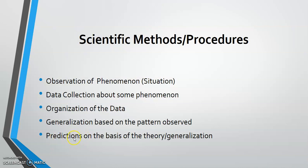The final scientific method is predictions on the basis of the theory or generalization. We can predict the demand curve and the supply curve. Based on the law of demand, the demand curve will be a downward-sloping curve, meaning that when price is high, quantity demanded is low, and when price is low, quantity demanded is high. For supply, based on the law of supply, the supply curve will be an upward-sloping curve, meaning that at a higher price, quantity supplied is also high, and at a lower price, quantity supplied is also low.